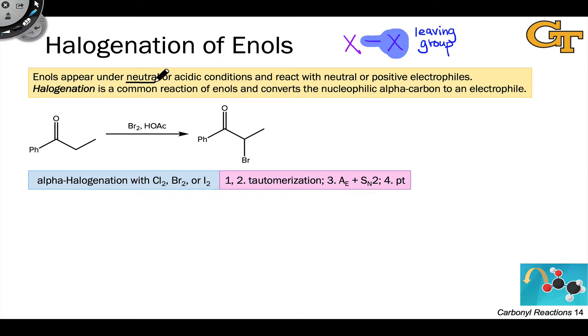Under either neutral conditions or conditions with a small amount of acid to catalyze formation of the enol, the enol intermediate appears and in the presence of X2 undergoes halogenation at the alpha carbon.